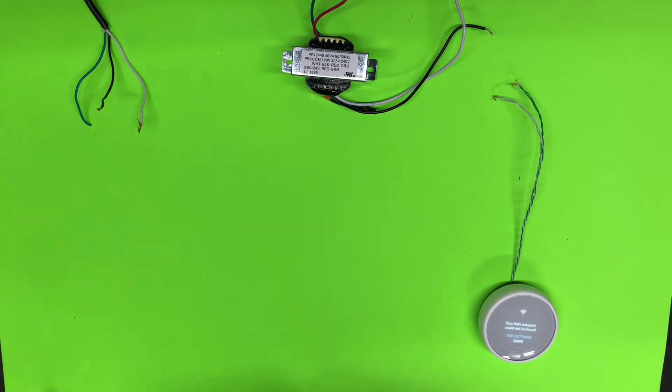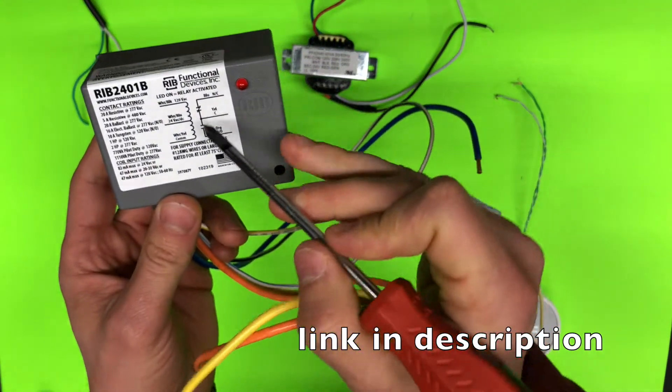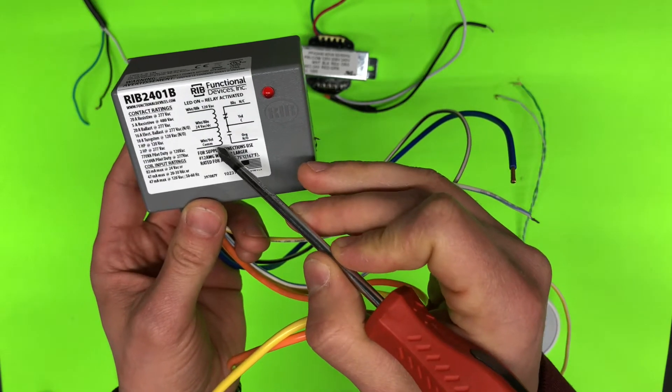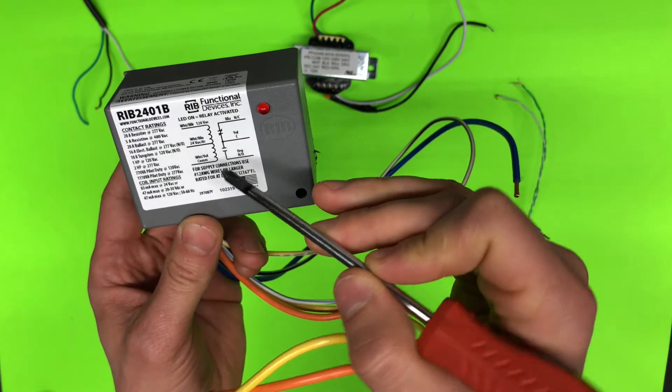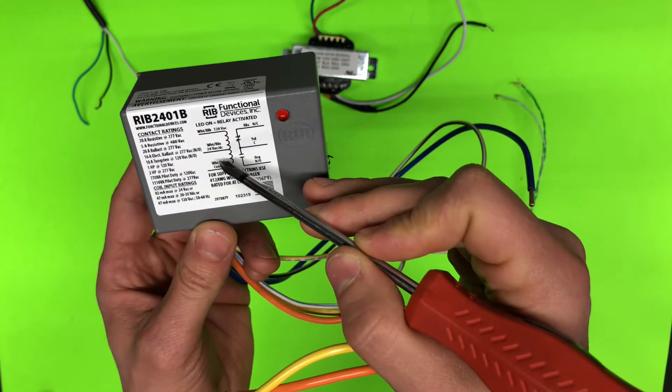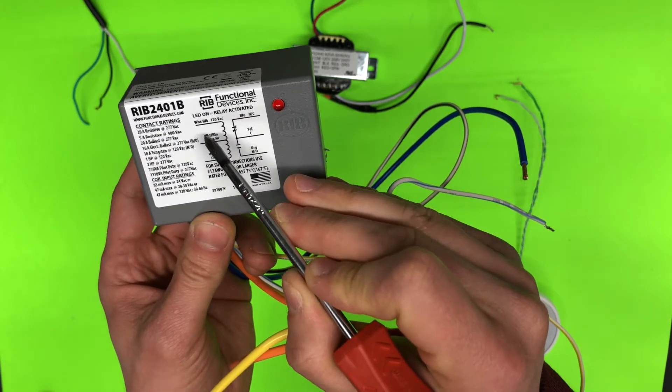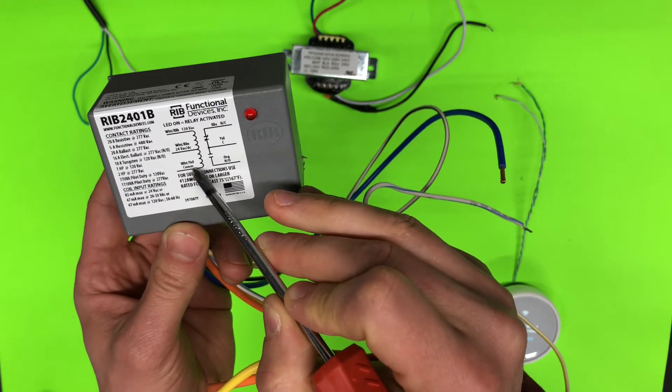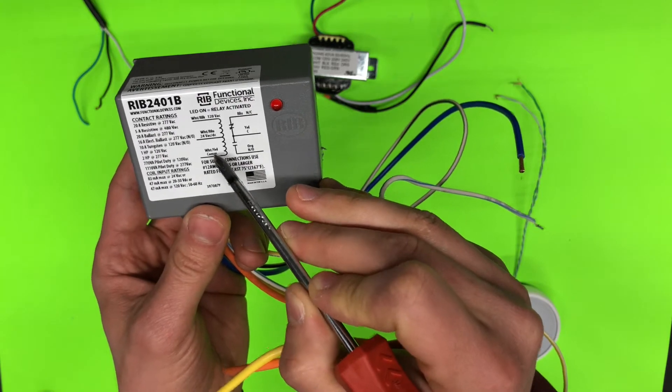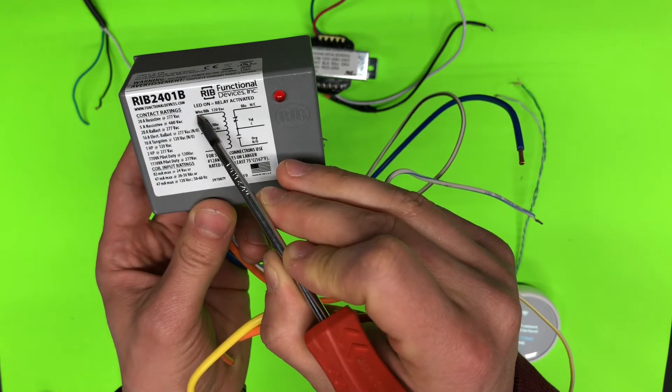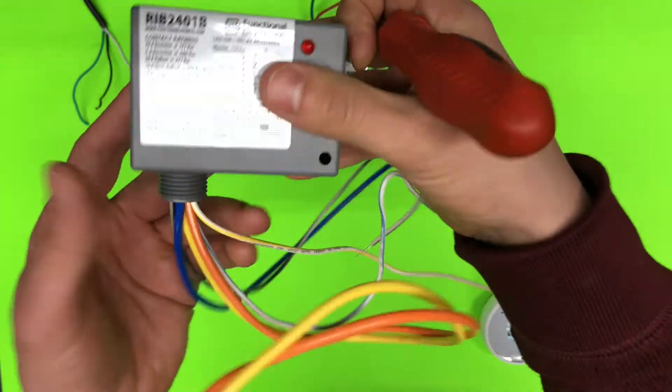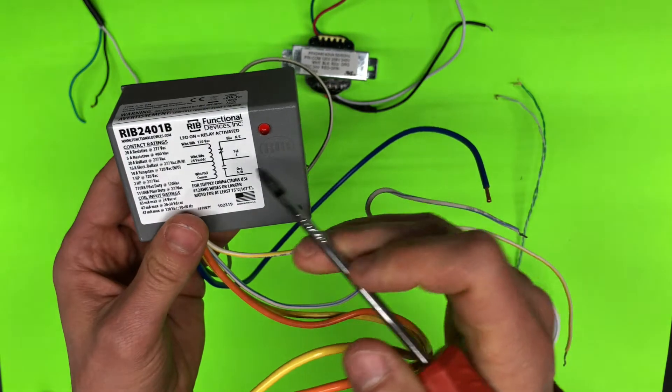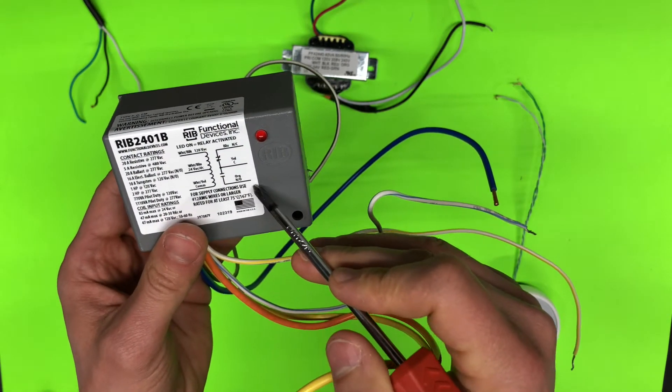Then we will use a relay. So the relay has, on the left side here, it has low voltage as well as high voltage input. That means we can close this relay with 24 volts AC or DC or 120 volts. I'm going to use 24 volts because our thermostat will send this signal, it's low voltage, so I don't need the white black cable.